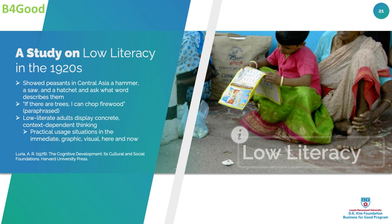There was a Russian psychologist who in the 1920s studied peasants in Central Asia. He would show them an axe, a hammer, and a saw and ask what's the word for it — the answer being 'tools,' an abstraction. But these peasants would say: if I have trees I can use the axe, chop up the branches, burn the wood and keep my family warm. This means concrete thinking — living in the immediate visual, graphic world of here and now and how can I use something.